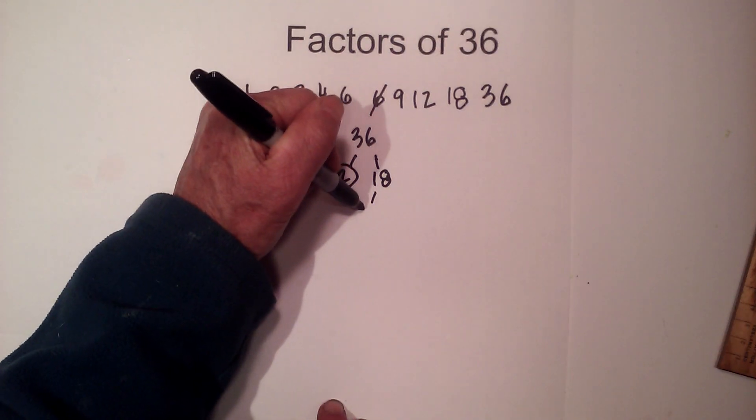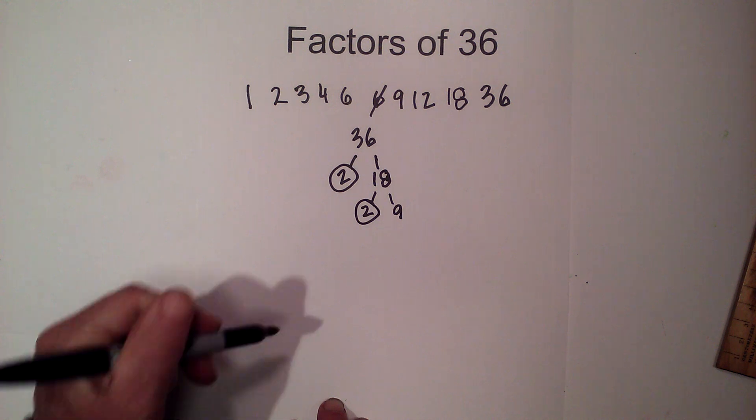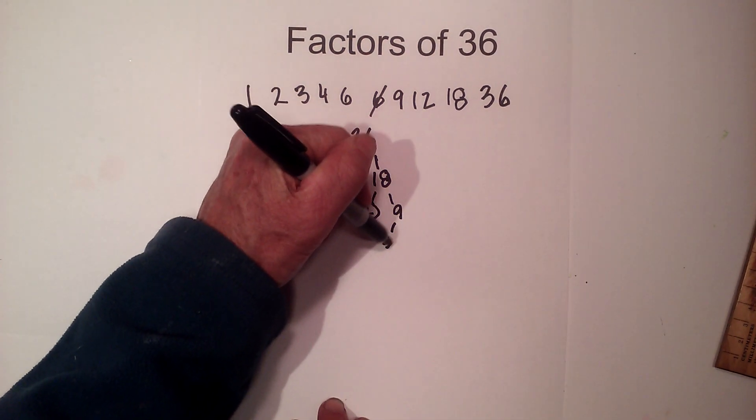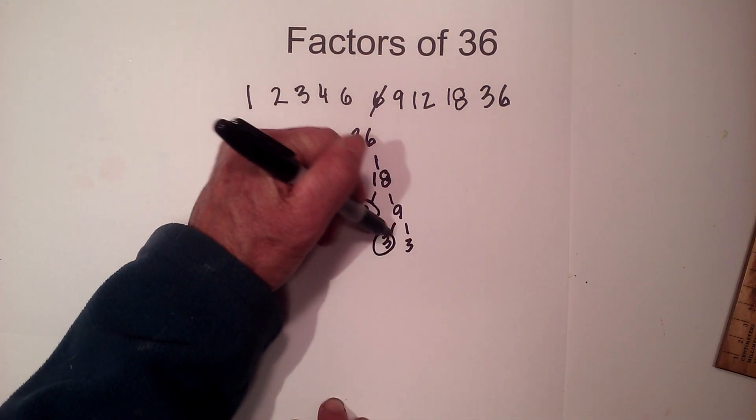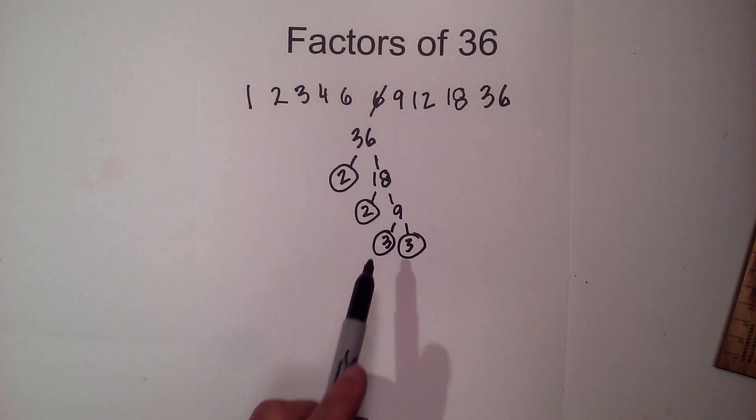Circle the 2 because it is prime. Now 2 times 9 equals 18. Circle the 2 because it is prime and 3 times 3 circle both of them because they are both prime so I'm down to just prime numbers.